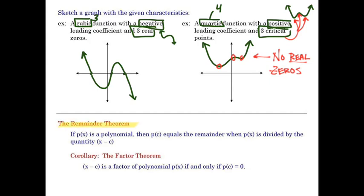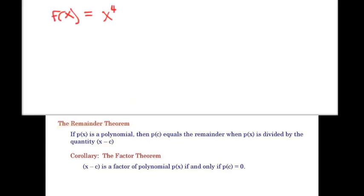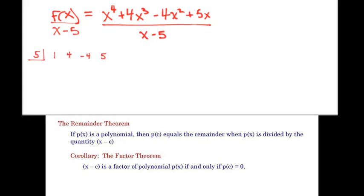All right, we have what's called the remainder theorem, which goes back to division of polynomials and specifically synthetic division. But basically what it says, if we took some fourth-degree polynomial and we divide it by x minus 5, and we wanted to see is that going to be a factor or not. And we have a synthetic division...